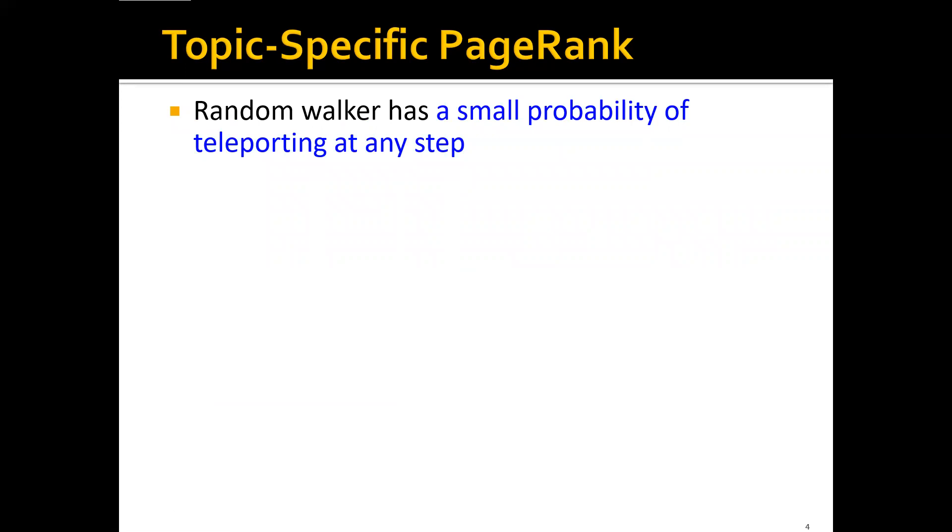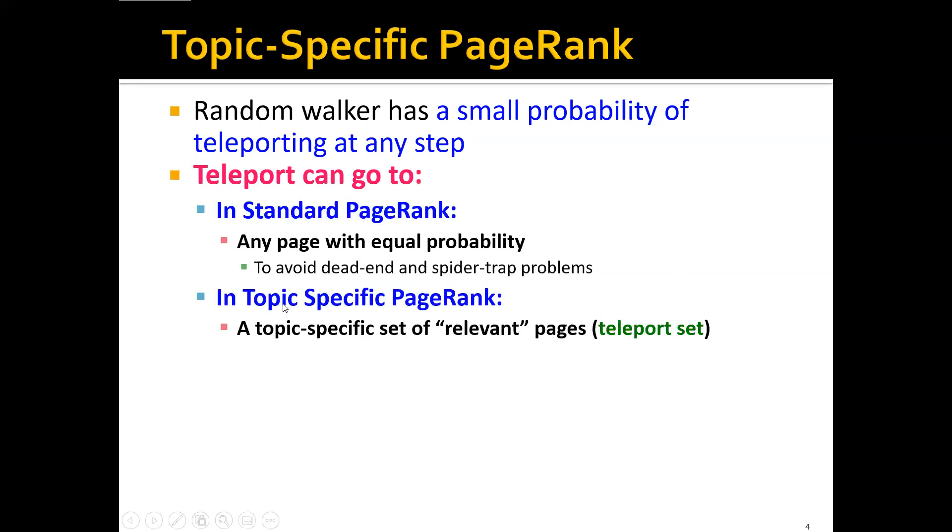And to do this, we actually only need to make a very small modification to the original PageRank algorithm. Remember that in that algorithm, the random walker actually has a very small probability of teleporting at any step. And in the standard PageRank, the teleport can go to any page with equal probability. And as you may have remembered, this is just to avoid the dead end and the spider trap problem.